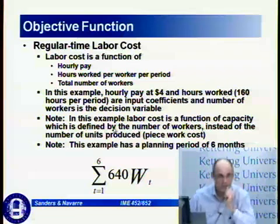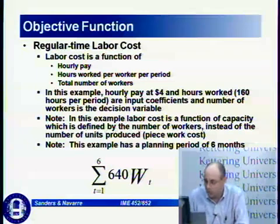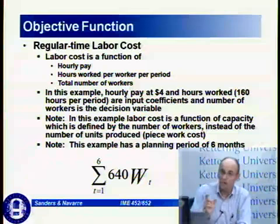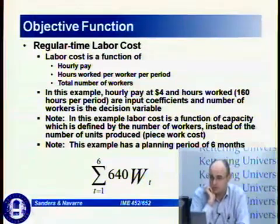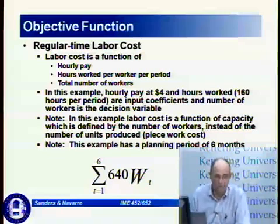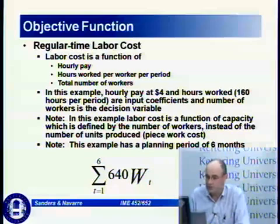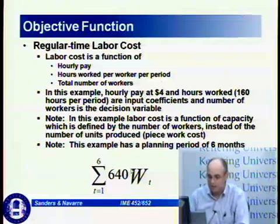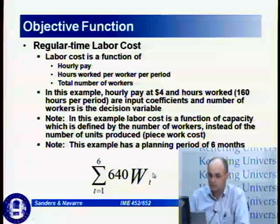Labor cost is a function of capacity defined by the number of workers instead of the number of units produced, similar to the DensePak example with NAMIAS. The number of workers is our capacity constraint, and we multiply by the coefficients to determine regular time labor cost. So we have $4 per hour multiplied by 160 hours per period — that's $640 per worker. Each worker available times $640 gives our regular time labor cost.